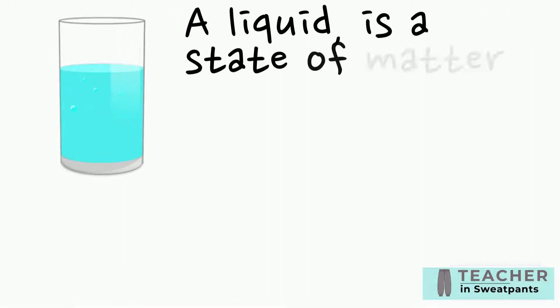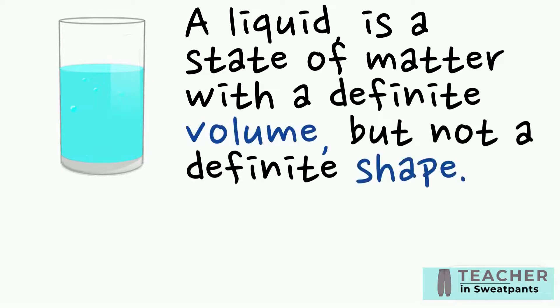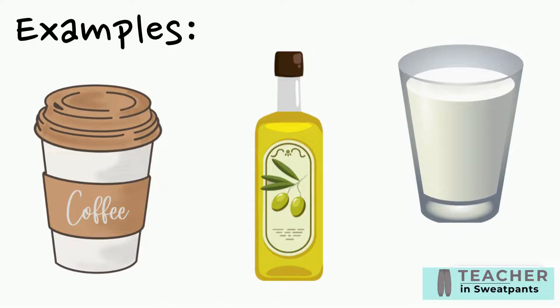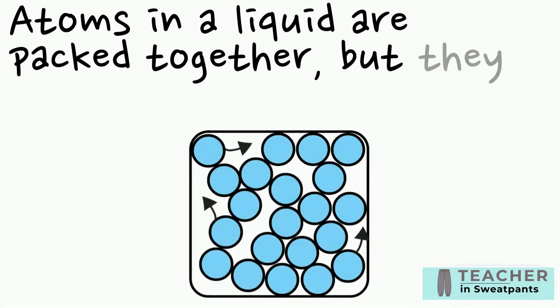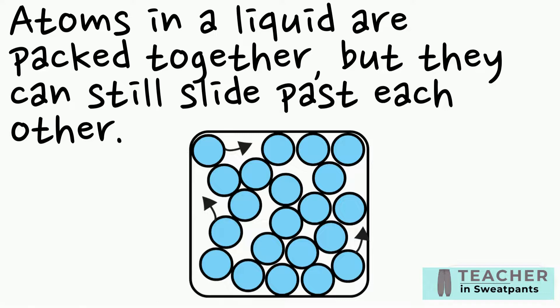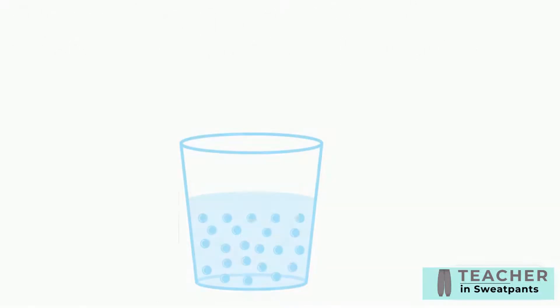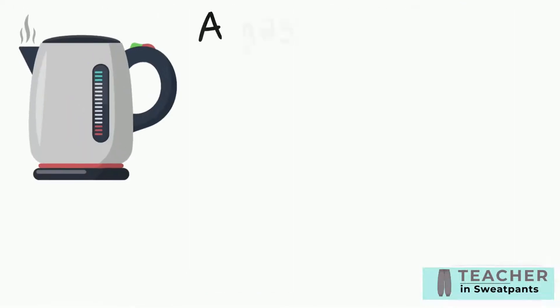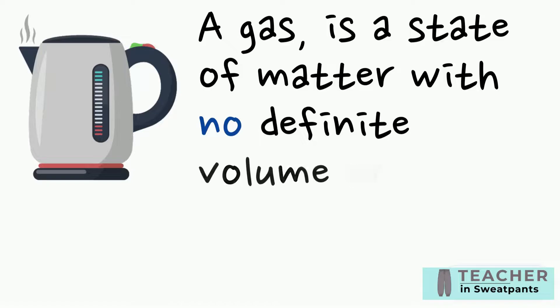A liquid is a state of matter with a definite volume but not a definite shape. Examples of a liquid include coffee, oil, and milk. Atoms in a liquid are packed together but they can still slide past each other. Liquids have a volume that stays the same but their shapes change — liquids take the shape of whatever container they are in.